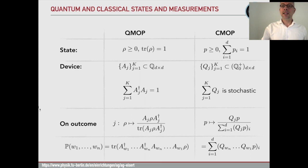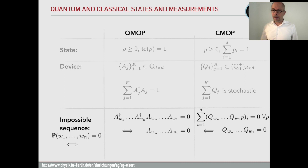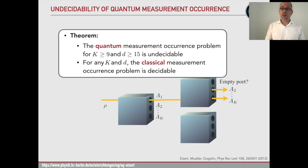An impossible sequence — one that will never happen — takes the form: the product of the respective Kraus operators is zero, or the product of the respective q-matrices on the right-hand side is zero. The statement is that the quantum measurement occurrence problem is undecidable for k larger than nine and physical dimension d equal to 15. This is undecidable, whereas for any k and any dimension d the classical measurement occurrence problem is decidable.